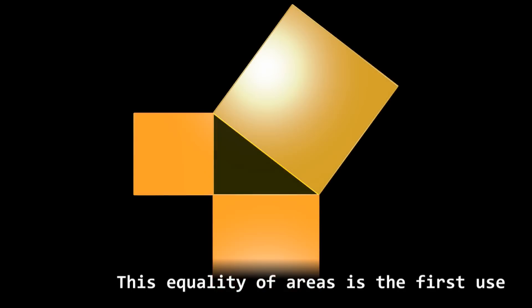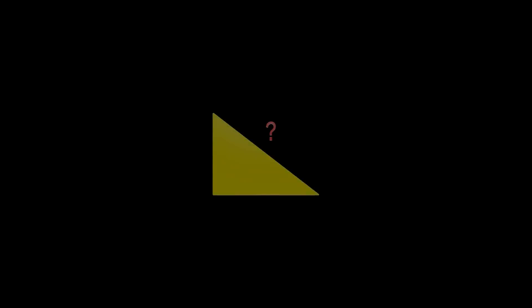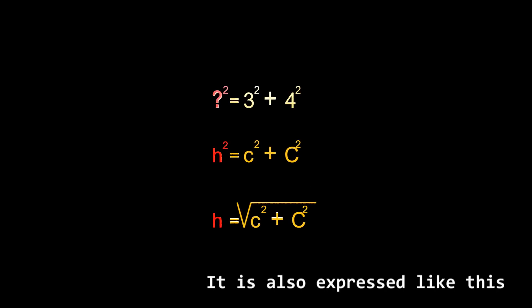This equality of areas is the first use of Pythagoras theorem. The second use is calculating the length of the hypotenuse knowing the length of the other two sides. It is also expressed like this.